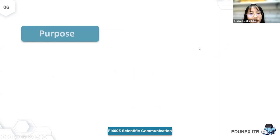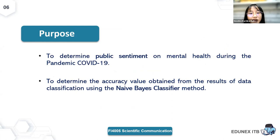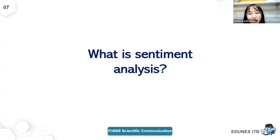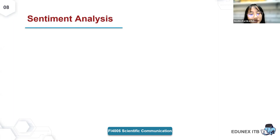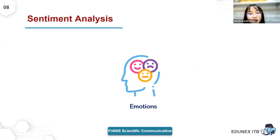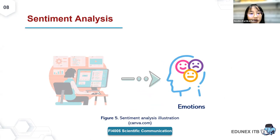In this study, sentiment analysis was carried out to see what Twitter users' opinions about mental health are, using the Naive Bayes method, and also to determine the accuracy of the data classification. What is sentiment analysis? Humans express their feelings regularly — these are called emotions. Scientists use techniques including machine learning to teach machines how to understand human emotions, and this is called sentiment analysis.